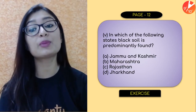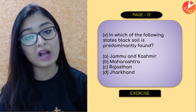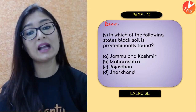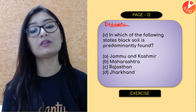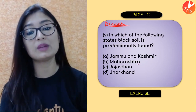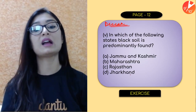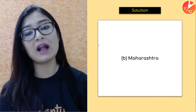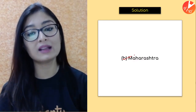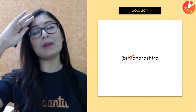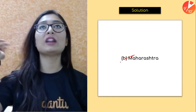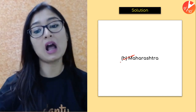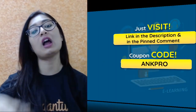The next question: In which one of the following states is black soil predominantly found — Jammu and Kashmir, Maharashtra, Rajasthan, or Jharkhand? Black soil, also called cotton soil, is found predominantly in the Deccan Plateau region — Maharashtra and Gujarat. So the answer is Maharashtra.